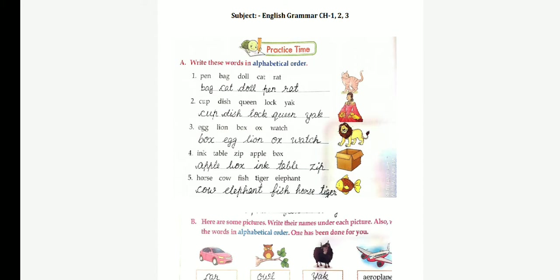You have to write: Bag, cat, doll, pen and rat. Next question: Cup, dish, spoon, lock, yak.